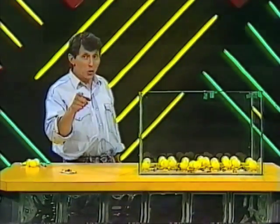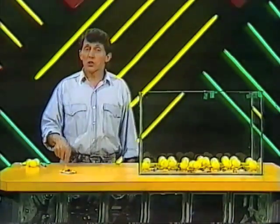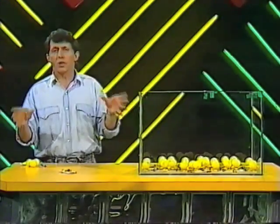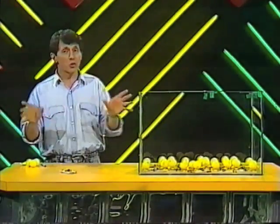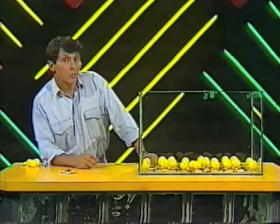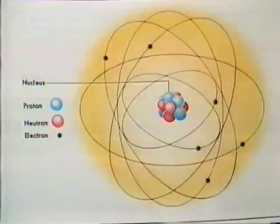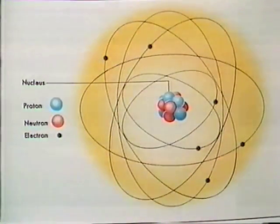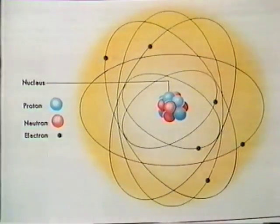I'm made of atoms, so are you. So is this table, and there are atoms in the air, but they are all too small to see. If we could see atoms, they would look something like this. In the center, little particles called protons and neutrons, and whizzing around the outside at great speed, even smaller particles called electrons.